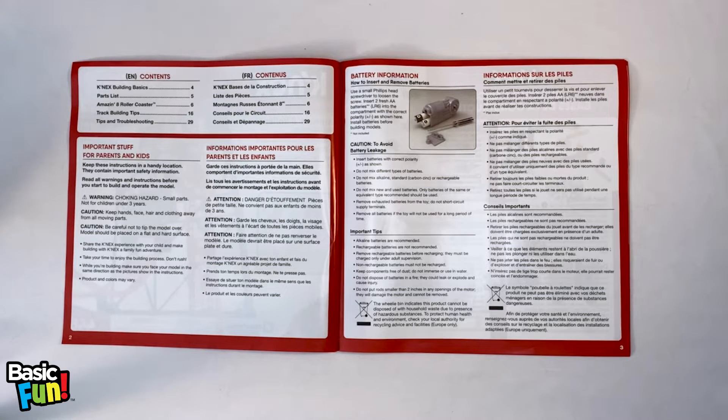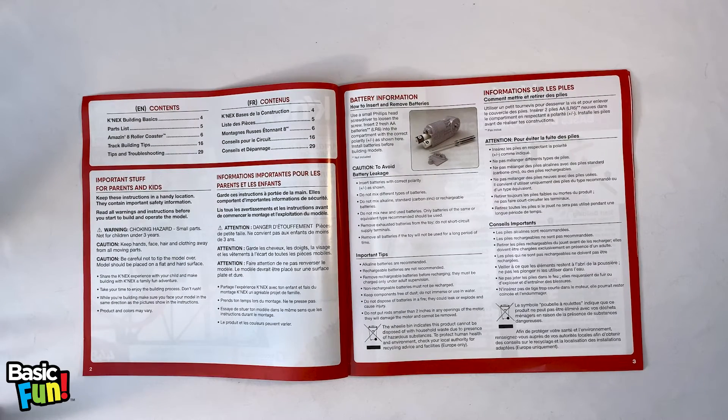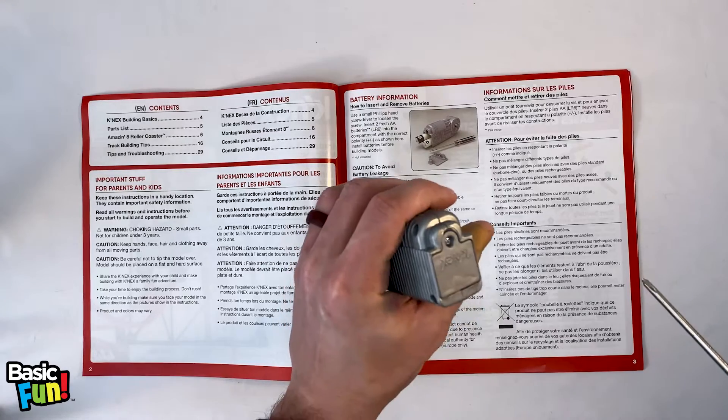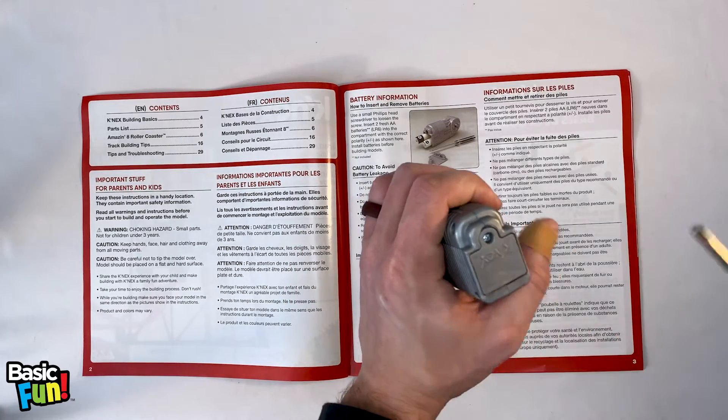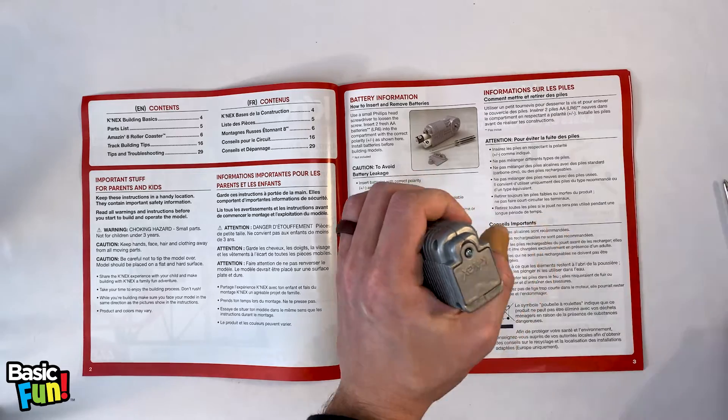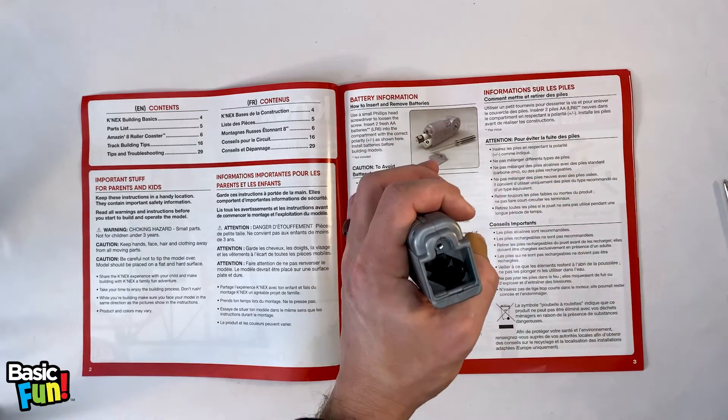The next page includes battery information and information about the motor. While we've got this page open, we might as well install the batteries. To do this, you'll need a small Phillips head screwdriver. You'll notice the battery cap here. Untighten the screw and then just put that battery cap off to the side.